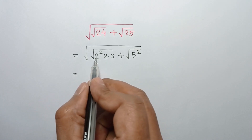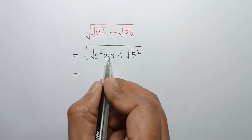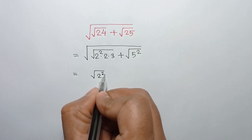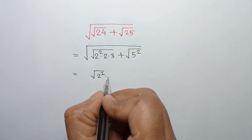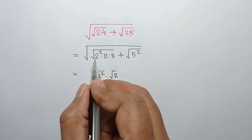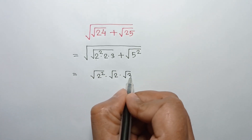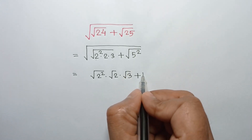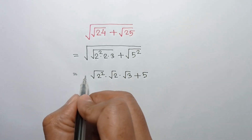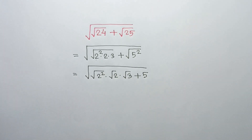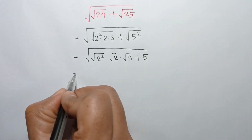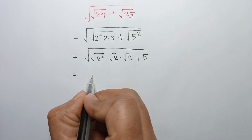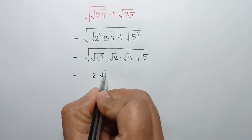This equals square root of 2 squared times 2 times 3, which can be written as square root of 2 squared times square root of 2 times square root of 3, plus this square root. The square and square root cancel out, leaving 5. So it becomes 2 times square root of 2 times square root of 3 plus 5.